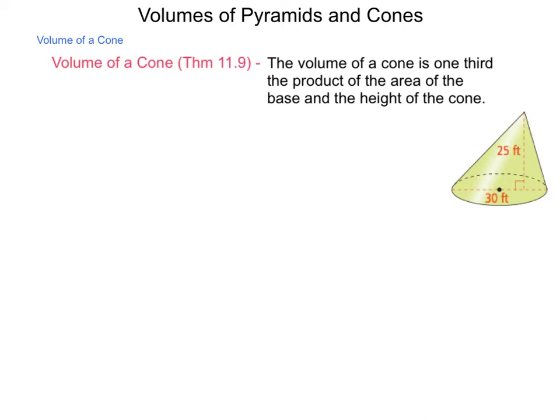Now, for a cone, first our volume is one-third the base area times the height. So, that's going to be one-third the base area is going to be a circle, so that's going to be pi r squared times h.